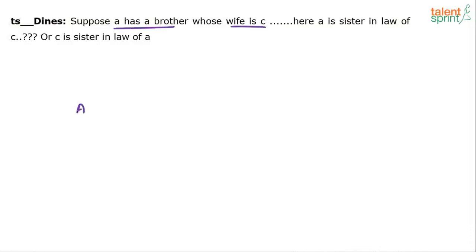Let's say A has a brother — we'll call him B — whose wife is C. Obviously, C is female. Now, note that A's gender is not known to us, so there are two possibilities: A is male or A is female.